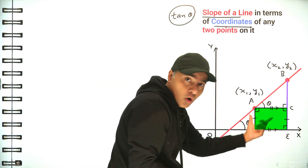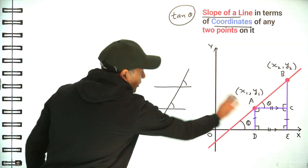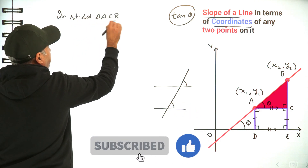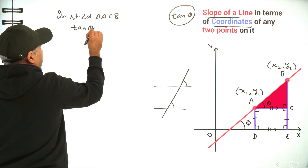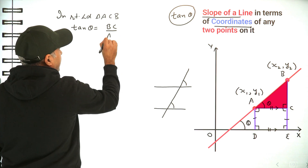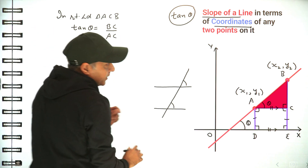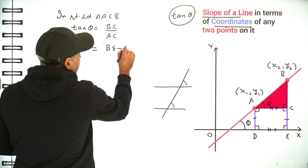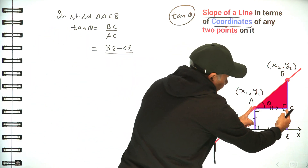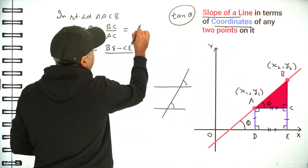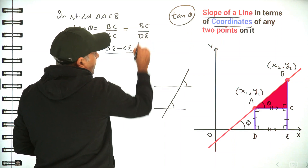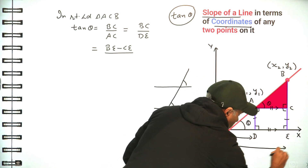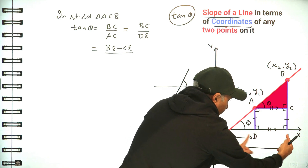In right-angled triangle ACB, tan(theta) equals perpendicular over base, which is BC over AC. Now BC equals BE minus CE, and since AC equals DE, we can write this as BC over DE.